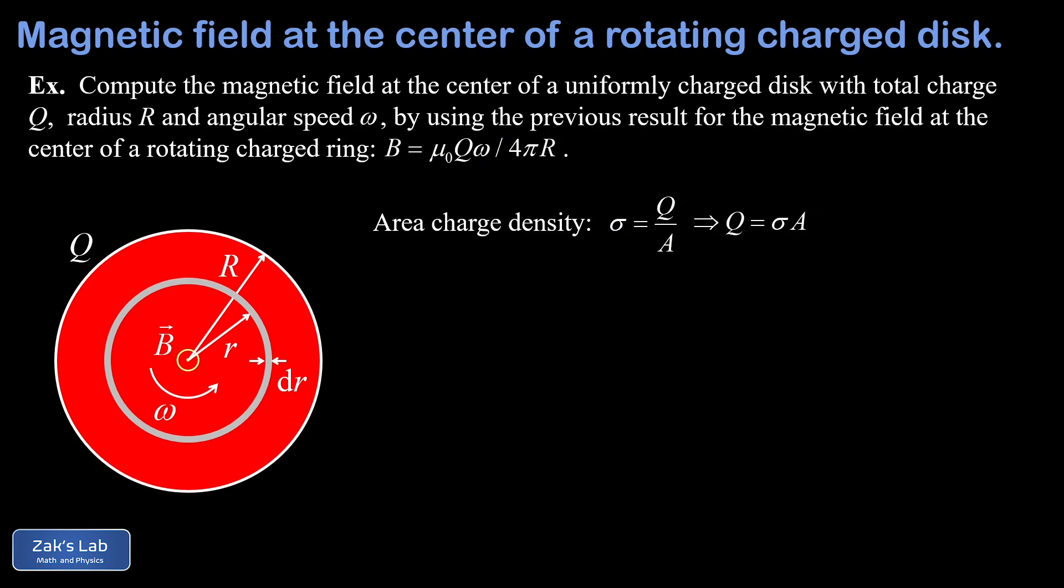So now we can write down the magnetic field contribution given by this ring by referring back to our result for the field at the center of a rotating charged ring. Now, because this contribution to the total magnetic field is infinitesimal, we're going to call it dB. So our formula was mu naught q omega over 4 pi r. But for this little ring, the charge contribution is infinitesimal, so we're going to call that dq. And we also write down a lowercase r down here because that's the radius of our thin ring.